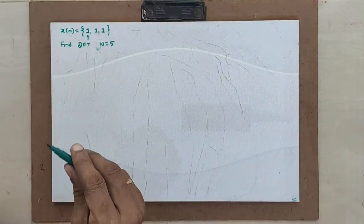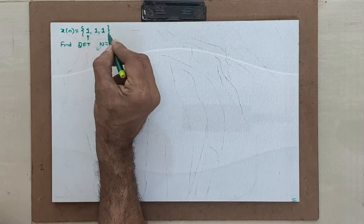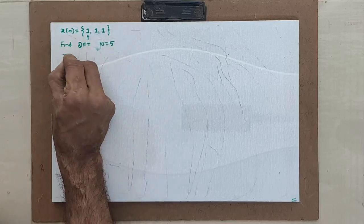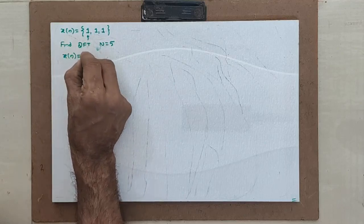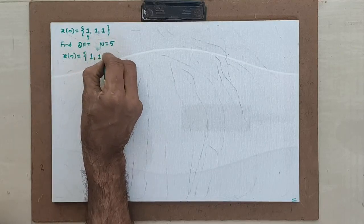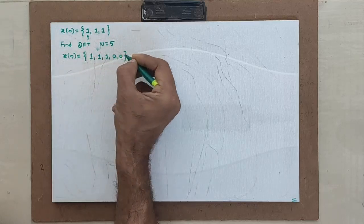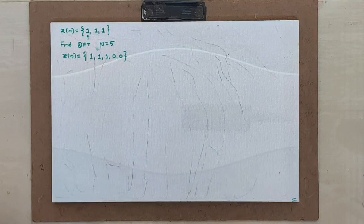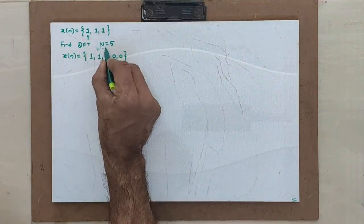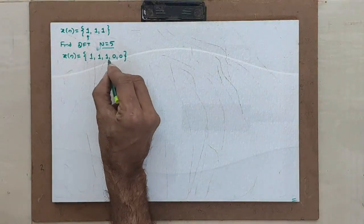Let us find this. First of all, the sequence is of length 3, but the given N is 5. So first, you make x of n of length 5. We have 1, 1, 1 and I will add pad with two zeros so that the length becomes 5. It was 3, N was given as 5, so I made x of n of length 5.